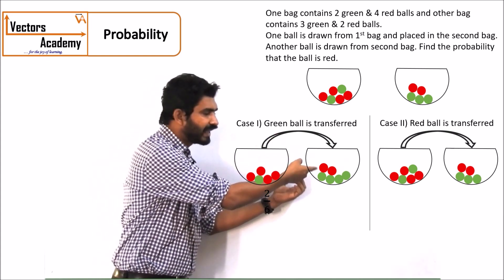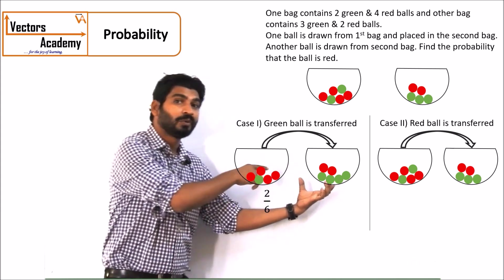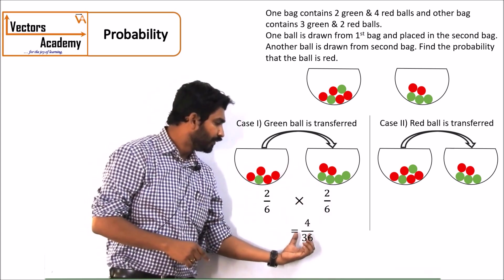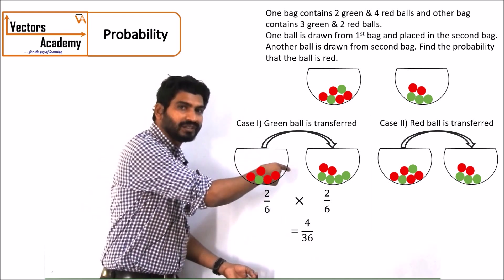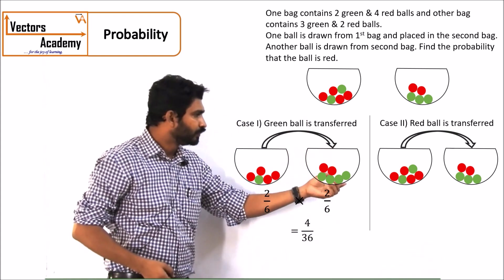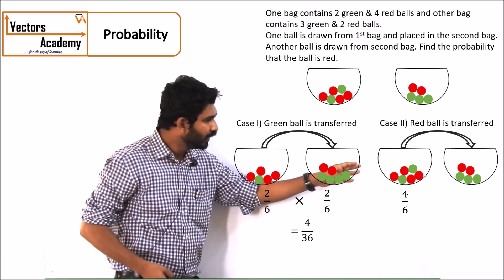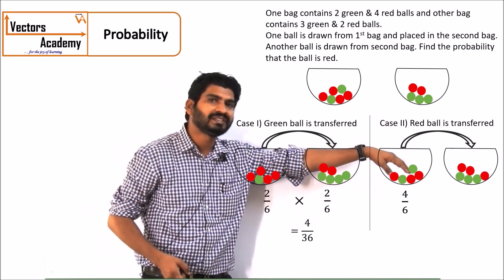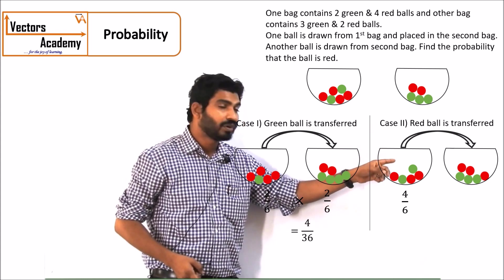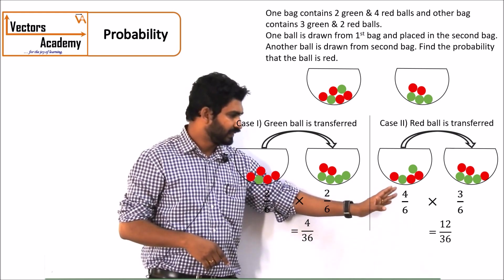Once the green ball is transferred, the second bag becomes 4 green and 2 red balls. The probability of selecting a red ball from it is 2 by 6. Multiplying both gives the probability of selecting red given a green ball was transferred. In the second case, a red ball is transferred. The probability of selecting red from the first bag is 4 by 6. The second bag then contains 3 green and 3 red balls, so the probability of selecting a red ball is 3 by 6. Multiplying gives the probability for this case.